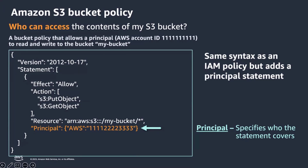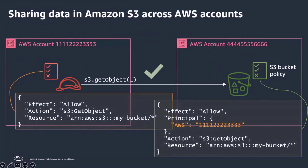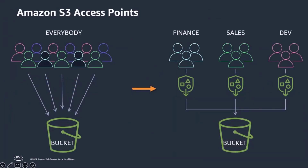A bucket policy has a very similar syntax with the addition of the principal element — that is, who can access your S3 resources. In this example, the principal is an AWS account. In order to share S3 resources cross-account, we need an IAM policy attached to the IAM entity and a corresponding bucket policy. If you use Amazon S3 to store shared datasets accessed by different applications and teams, bucket policies can become more complex and time-consuming to manage, and making a mistake means potentially affecting all users and applications accessing the bucket.